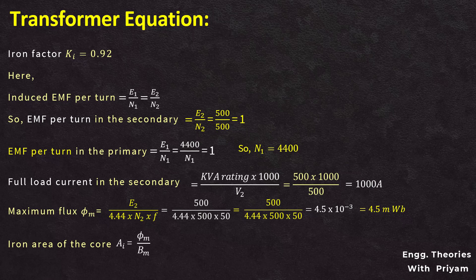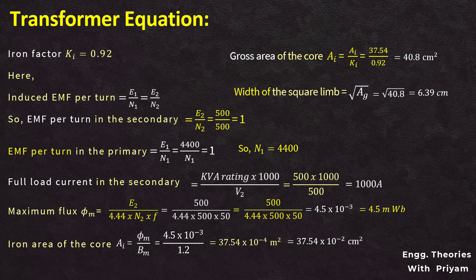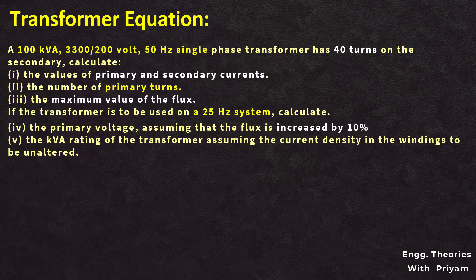The iron area of the core equals the ratio of maximum flux φm to flux density Bm. With φm = 4.5 × 10⁻³ and Bm = 1.2, this gives an iron area of 37.54 × 10⁻⁴ meter squared, or 37.54 cm squared. The gross cross-sectional area of the core equals the iron area divided by the iron factor ki: 37.54 divided by 0.92 equals 40.8 cm squared. The square limb dimension equals the square root of the gross area, which is √40.8 = 6.39 centimeter.